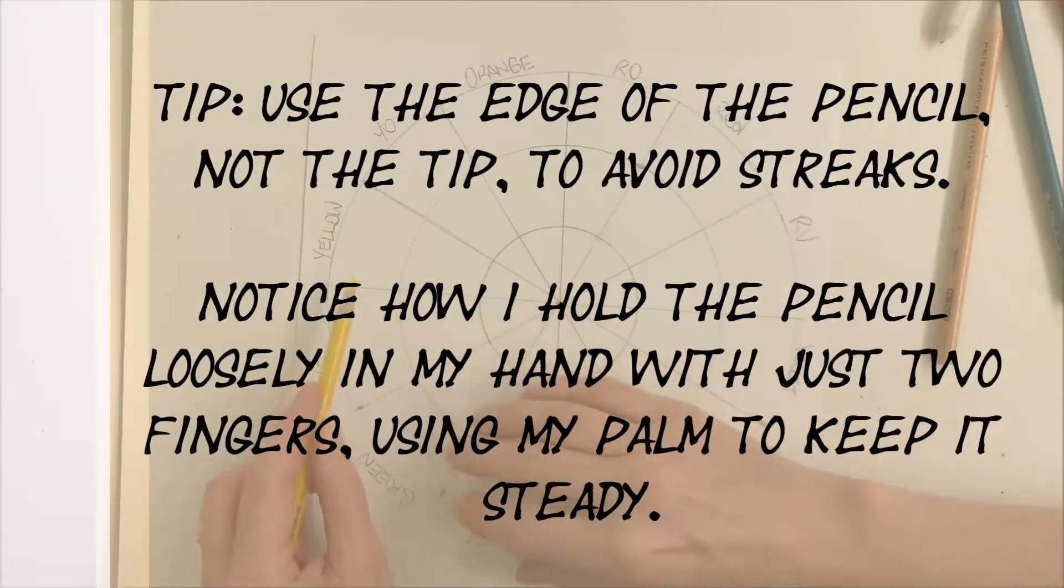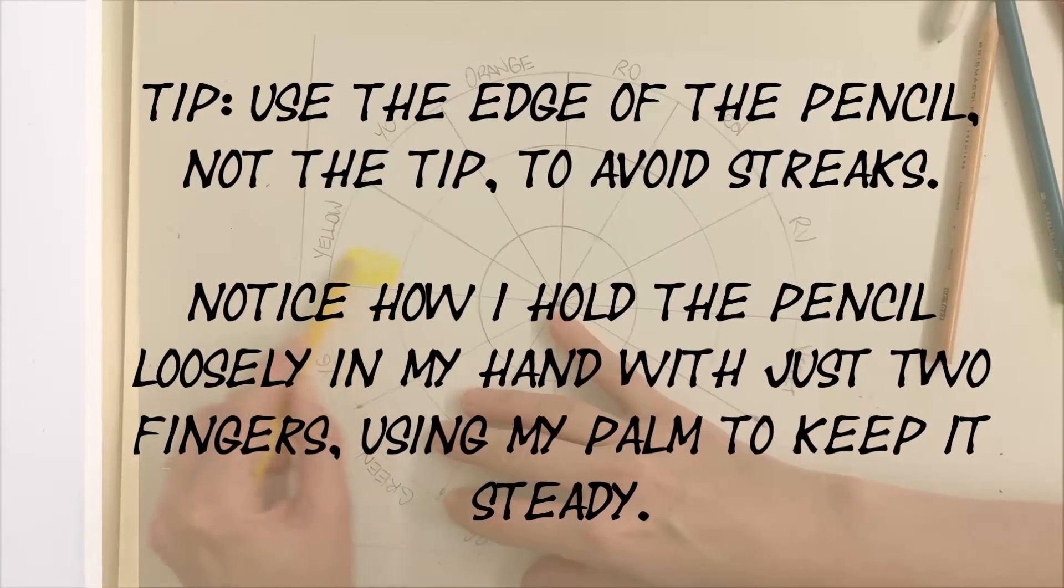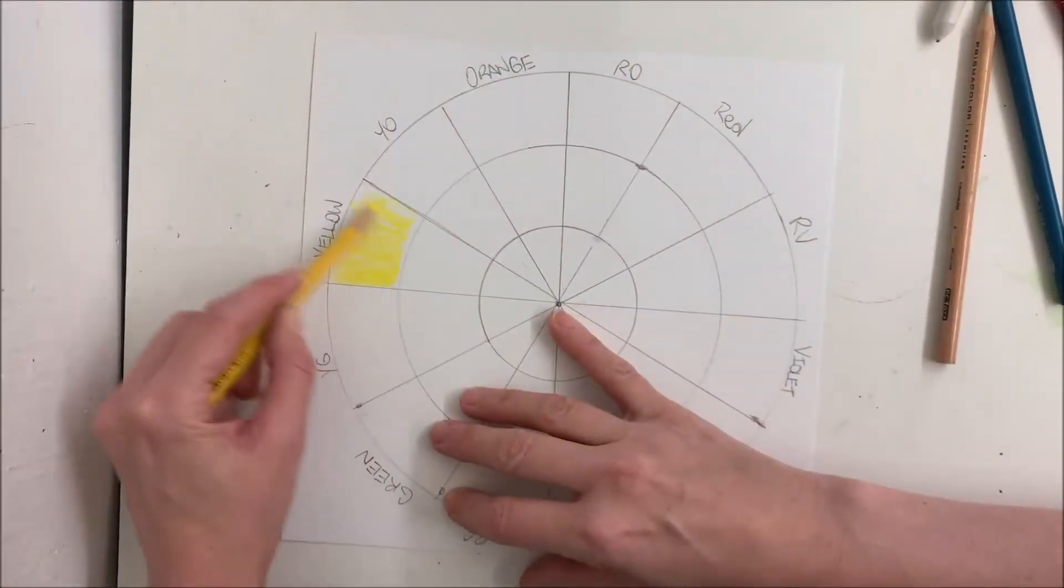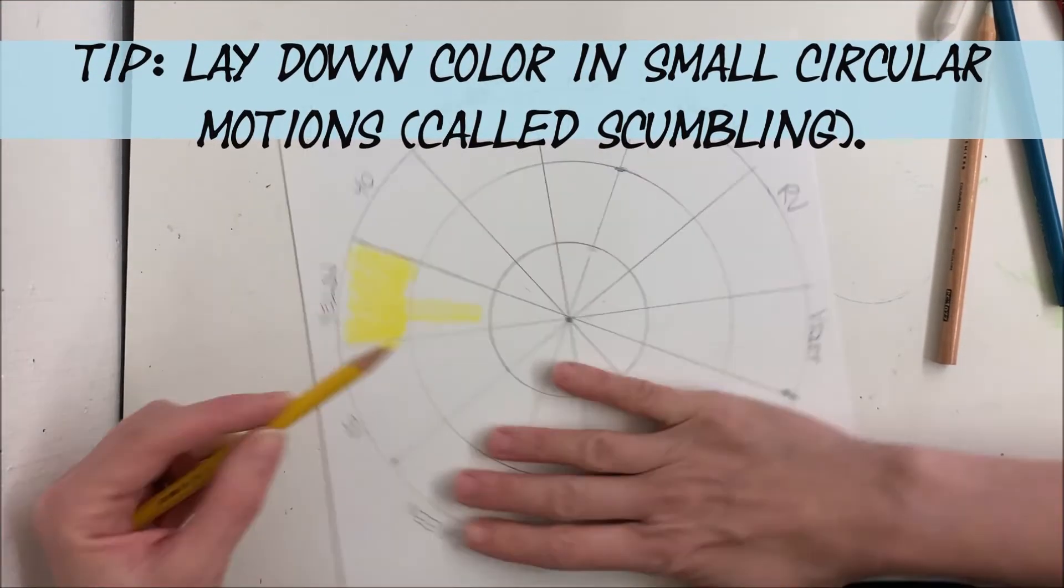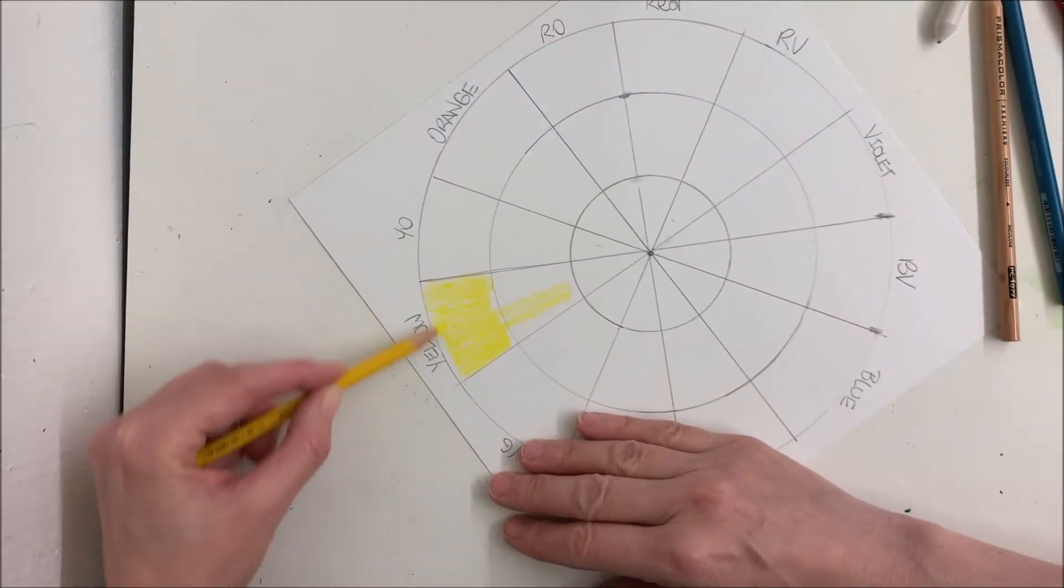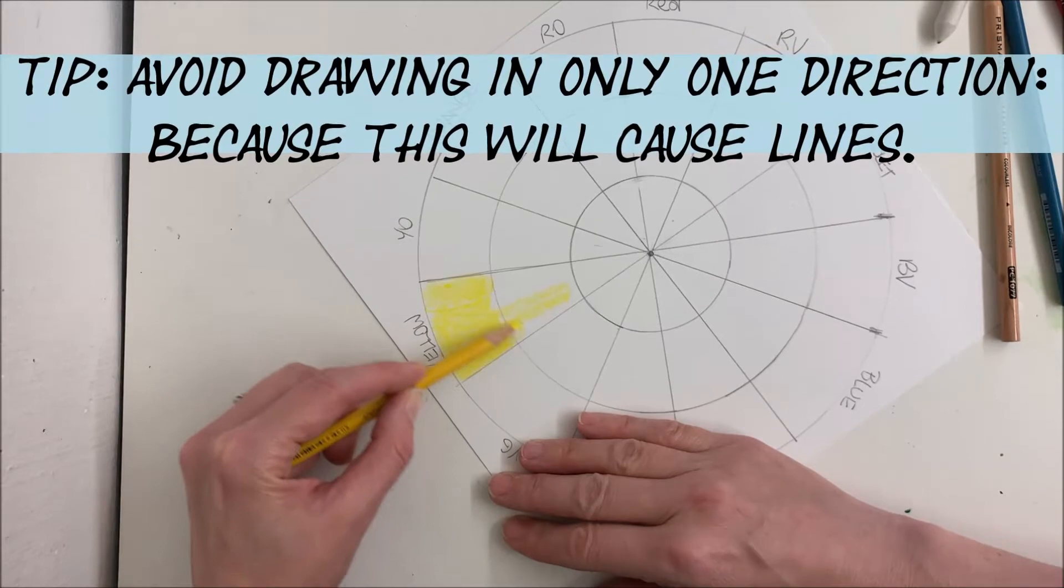And remember you're using the edge of your pencil, not your tip. And you want to go in concentric circles. It's called scumbling, also referred to as the Brillo pad method. You don't want to go in one direction. You want to go in multiple directions. So if you do tiny circles, you won't end up with lots of lines.